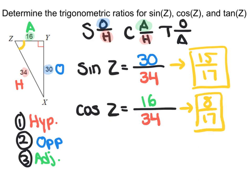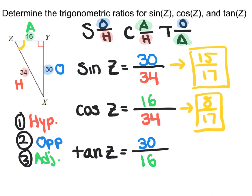And then lastly, if I want tangent of Z, I put the opposite on the top, which in this case is 30, over the adjacent, which in this case is 16. So if I simplify 30 over 16, it would give you a value of 15 over 8.